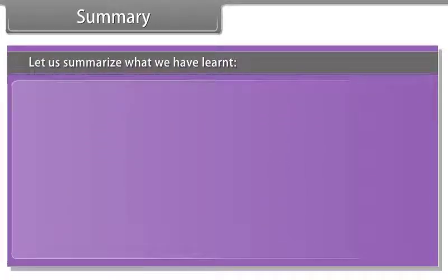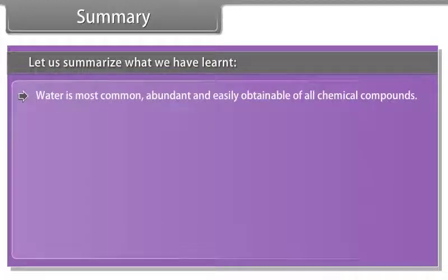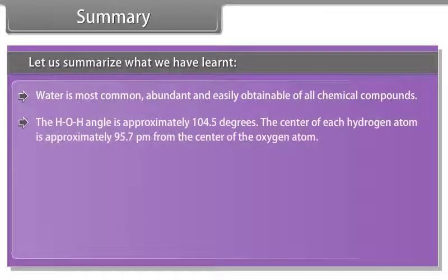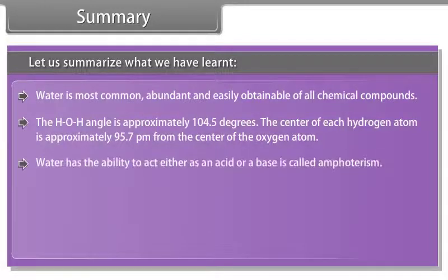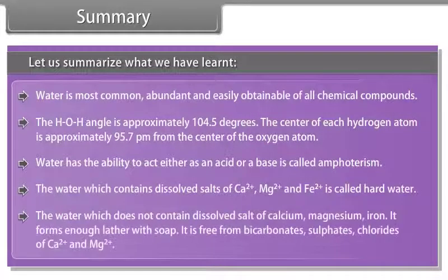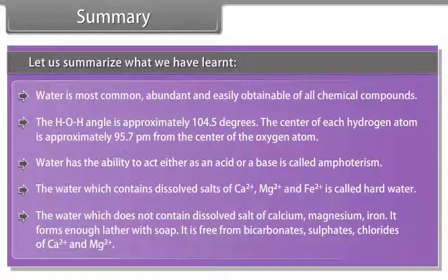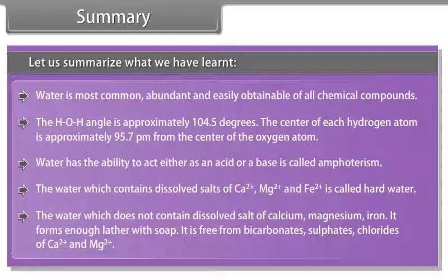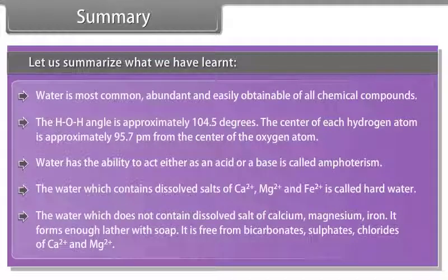Let us summarize what we have learned. Water is the most common, abundant, and easily obtainable of all chemical compounds. The H-O-H angle is approximately 104.5 degrees. The center of each hydrogen atom is approximately 95.7 picometers from the center of the oxygen atom. Water has the ability to act either as an acid or a base, which is called amphoterism. The water which contains dissolved salts of Ca2+, Mg2+, and Fe2+ is called hard water. The water which does not contain dissolved salts of calcium, magnesium, or iron is called soft water. It forms enough lather with soap and is free from bicarbonates, sulfates, and chlorides of Ca2+ and Mg2+.